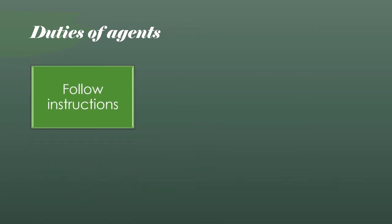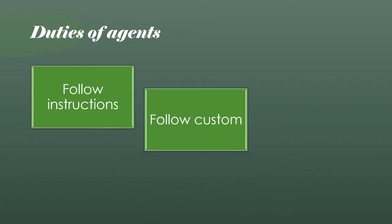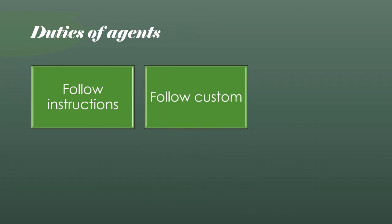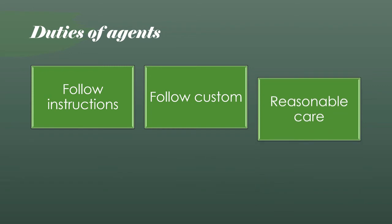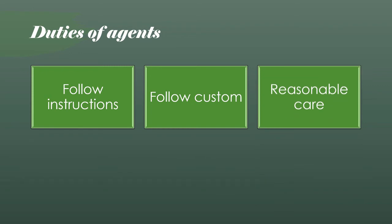The most important duty of an agent is to follow the instructions of the principal. The principal gives instructions and the agent is supposed to follow them. If there is no access to those instructions, the agent is supposed to follow the local custom relating to that particular contract of agency. The agent is also supposed to take reasonable care of the goods belonging to the principal.